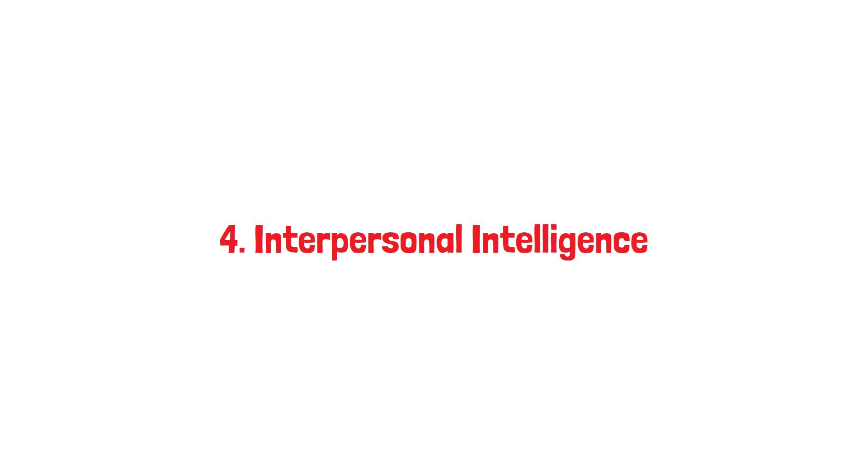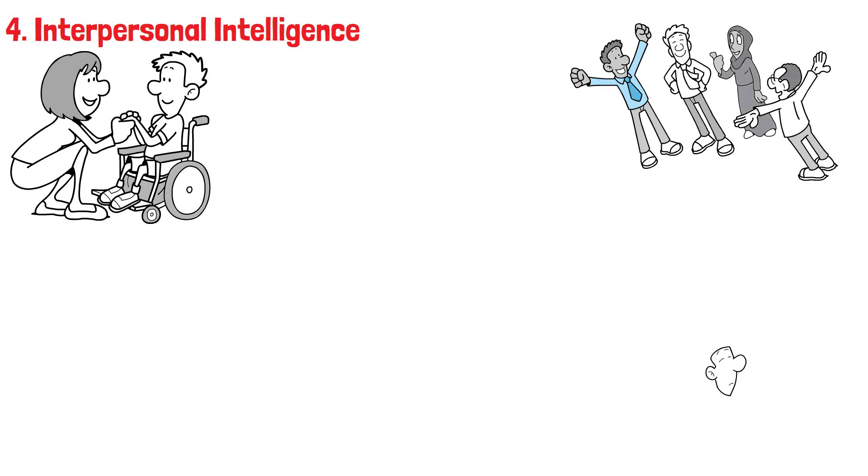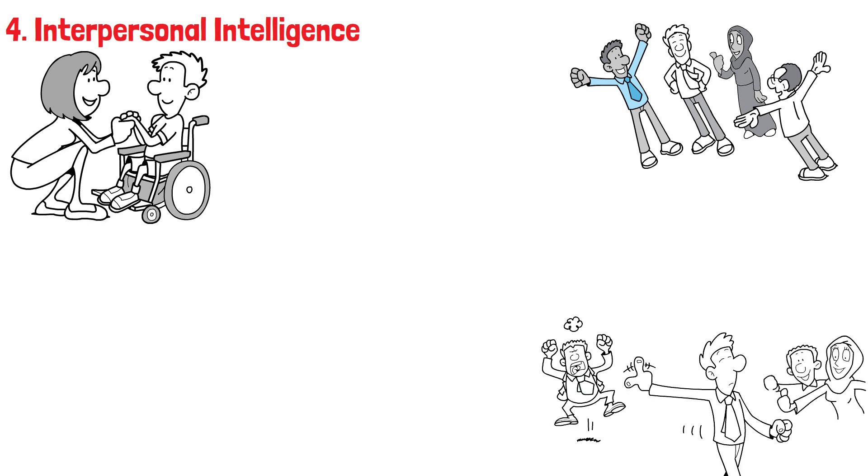Number four, interpersonal intelligence. If other people fascinate you, and you can sense what others feel as if their emotions are your own, you likely have high interpersonal intelligence. Those gifted with this intelligence have their finger on the pulse of human relationships. They intuitively understand what makes people tick, what brings them joy,